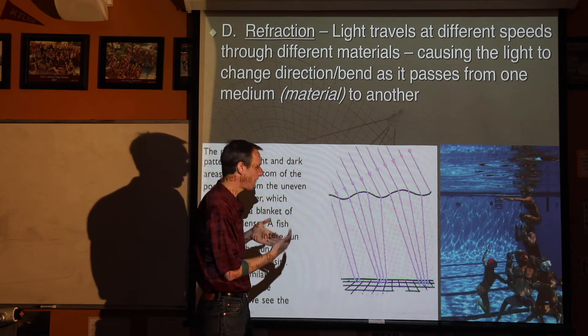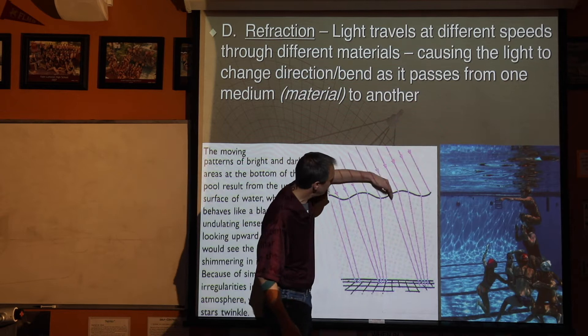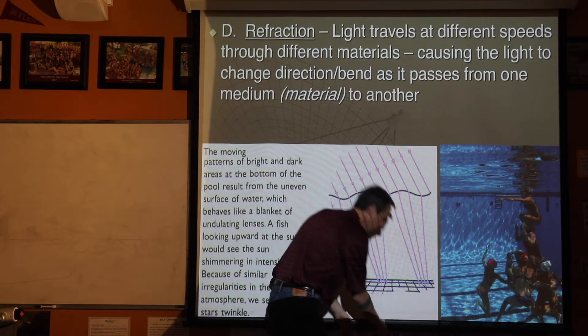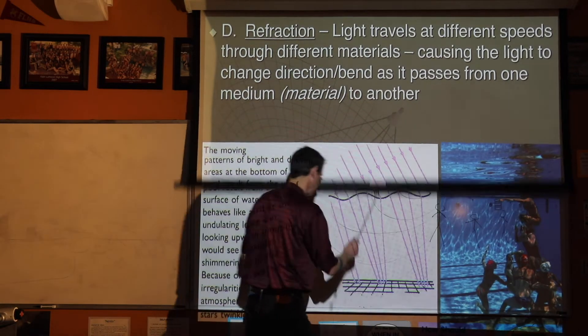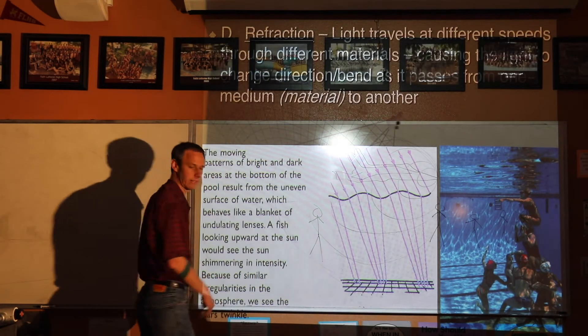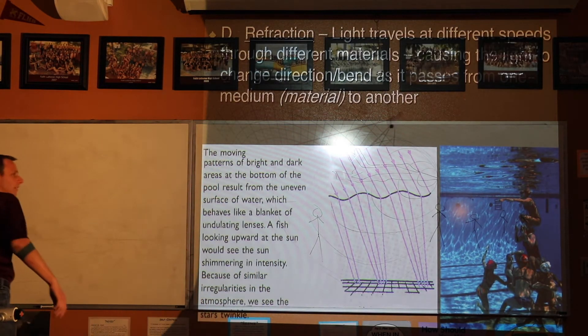Now, if you hit straight — here we have light hitting at a 90-degree angle — it goes pretty straight. But if it hits at an angle, like your wagon, it's going to turn.